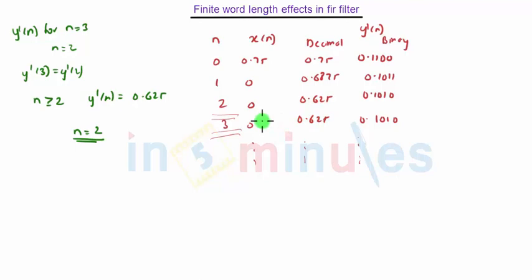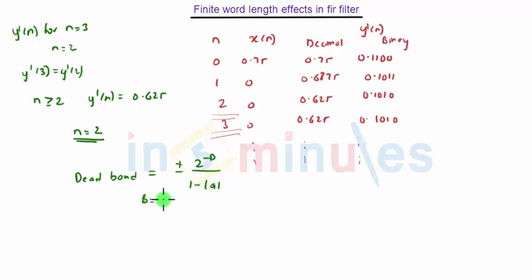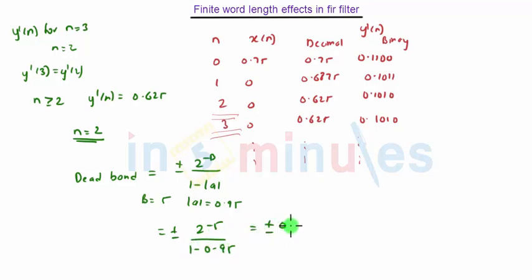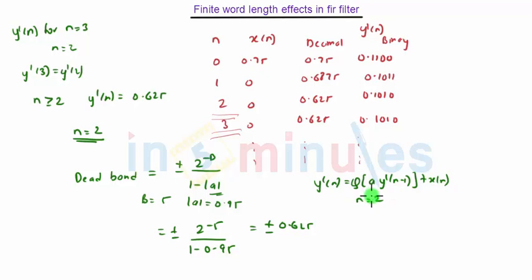For the first-order system with only poles, the dead band is given as ±2⁻ᵇ / (1 − |a|). Here b is equal to 5 and |a| is equal to 0.95, so the dead band will be ±2⁻⁵ / (1 − 0.95), which gives ±0.625. Here 'a' is from the equation y'(n) = q(a · y'(n−1) + x(n)), and b is the number of bits to which the product is contracted, given as 5 bits. So this is the dead band of the filter. Thank you.